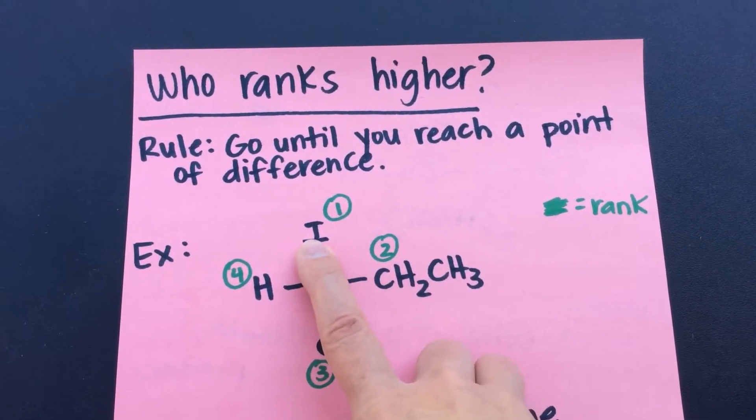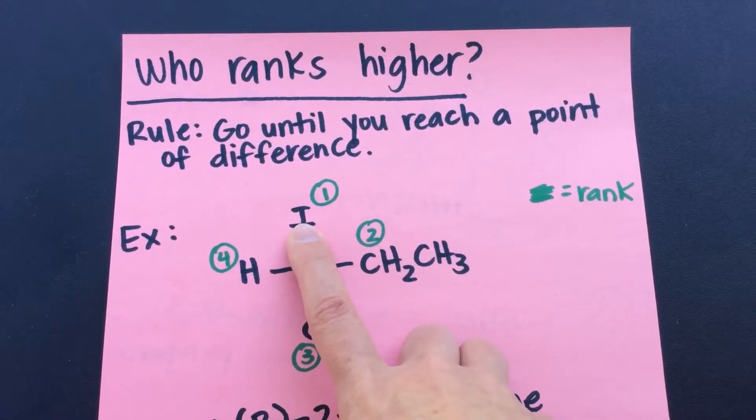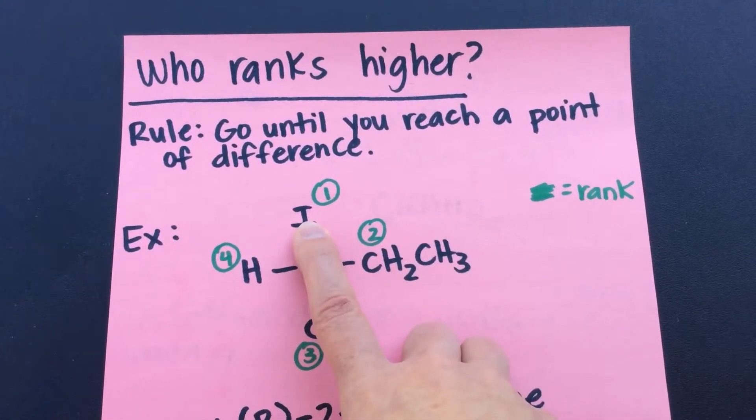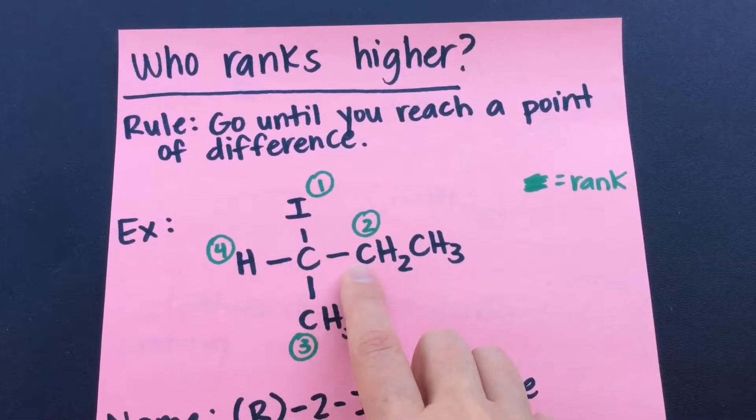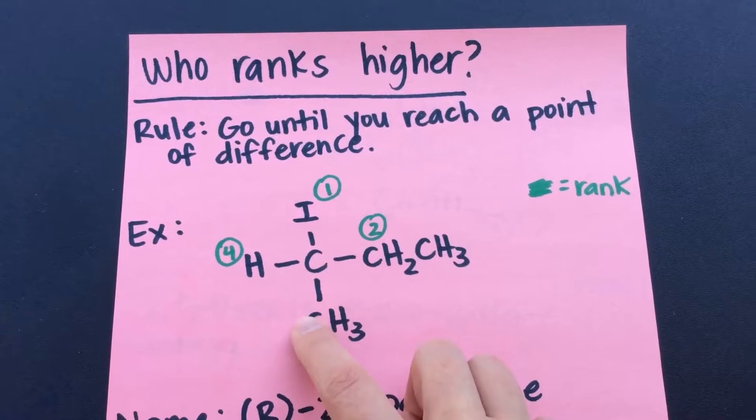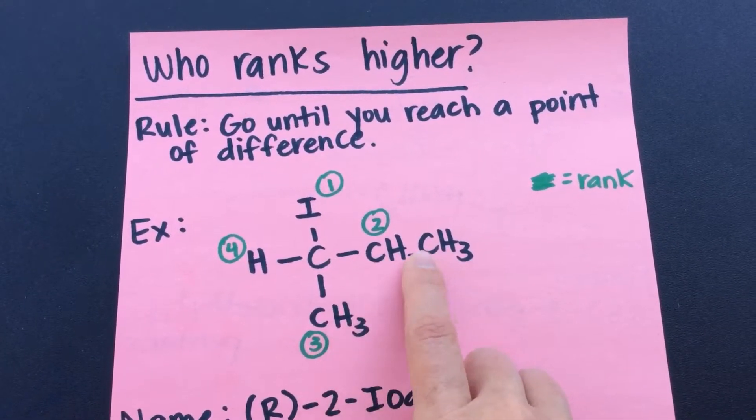We already know that iodine is going to be number one, right? Its atomic number is much higher. So that's obviously number one. That's easy. But we've got a carbon here and a carbon here. They're both carbons. That carbon's attached, that carbon's attached. So we have to go until we reach a point of difference.